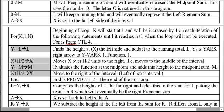Inside the loop, Y1 evaluates the function — Y1 must be set to the function we are integrating. It adds Y1 at the current X (which starts at A) to L, giving L the height at the far left end. Then it moves X over by half an interval (H/2), finds the height there, and adds it to M. So M now holds the height at the midpoint of the first interval. Then it moves over another half-interval.